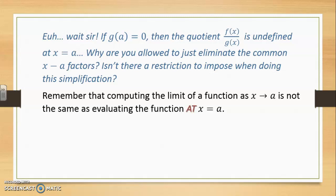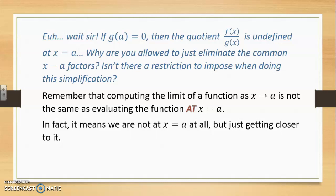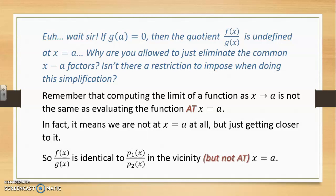Now remember that computing the limit of a function as x approaches a is not the same as evaluating the function at x equals a. In fact, doing the limit means we are not at x equals a at all; we're only getting closer to it but we are still a certain distance away from a. So we are not breaking any rules; we are not using the function's value at a point where it is undefined yet. So f(x) over g(x) is actually identical to the quotient p1 over p2 in the vicinity but not at x equals a. But that's fine enough when we're talking about limits.